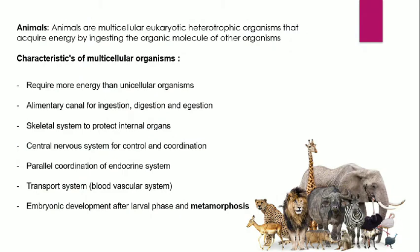In R.H. Whittaker's 5 Kingdom classification, the 5th Kingdom is Kingdom Animalia. Animals are multicellular, eukaryotic and heterotrophic organisms that acquire energy by ingesting the organic molecules of other organisms. They are multicellular, meaning made up of more than one cell. They are eukaryotic, showing a true nucleus, and they are heterotrophic — since they do not have chlorophyll, they cannot perform photosynthesis, so they depend on other organisms and ingest organic molecules as food, breaking down complex food into simpler form.